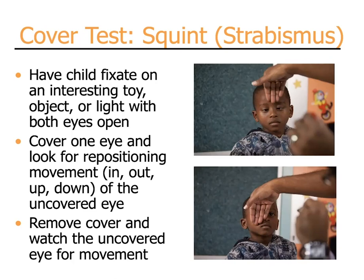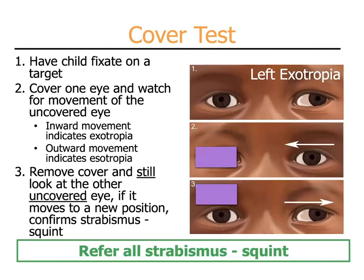Then remove the cover and watch the uncovered eye for additional refixation movement. With the cover test, if the uncovered eye moves inward when one eye is covered, that indicates it was exotropic or outward deviated. If the uncovered eye moves outward, that means it was deviated inward or esotropic. You then remove the cover from the covered eye and continue to look at the uncovered eye — if it moves to a new position, this confirms misalignment, strabismus, or squint. Refer all strabismus or squint cases for further evaluation.